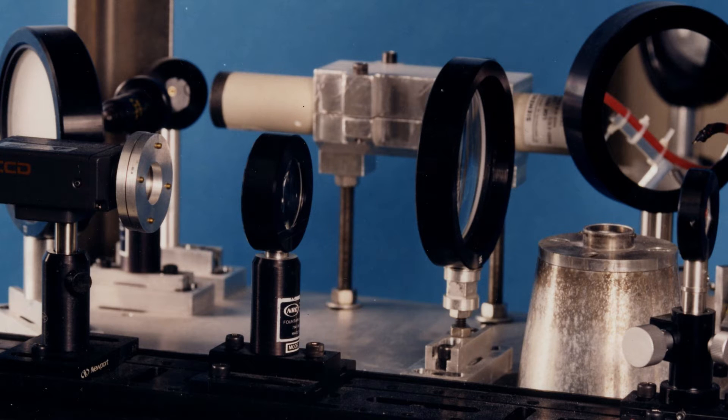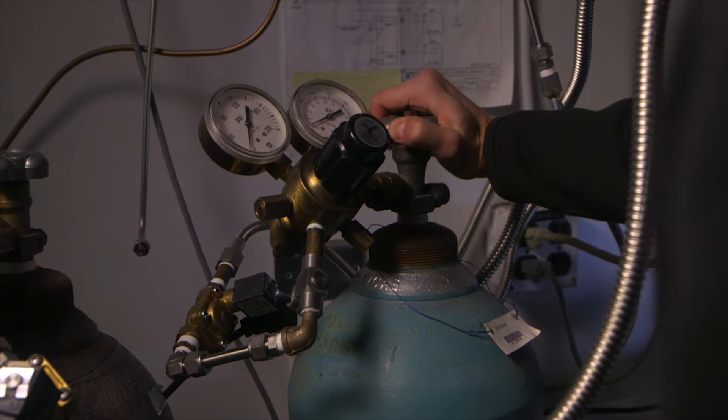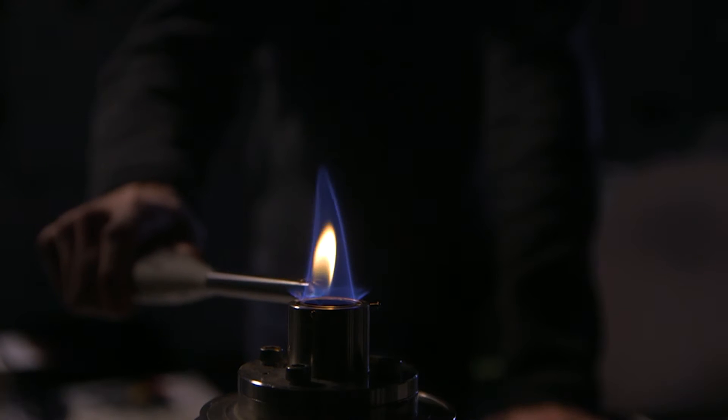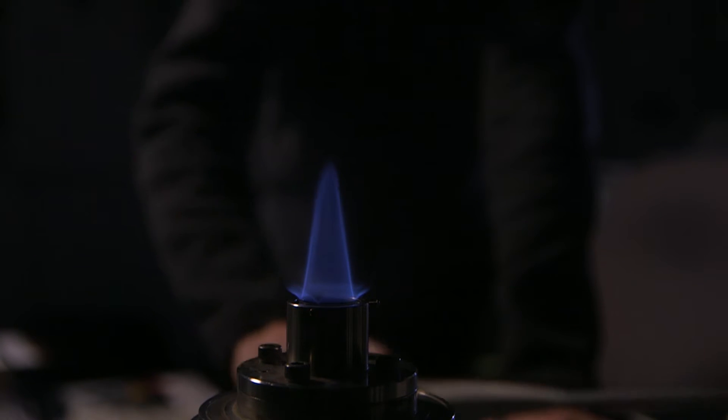Robert devised an elegant solution: a single central flame surrounded by a ring of smaller flamelets to stabilize the cone. And it was a success.